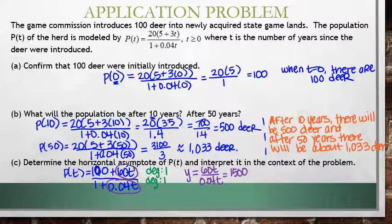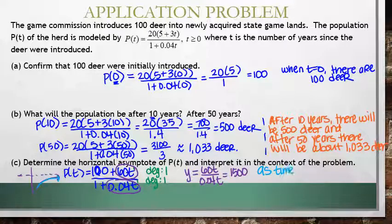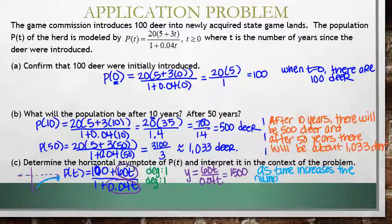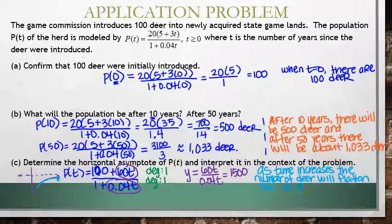What does this mean in the context of the problem? If you think about it, a horizontal asymptote is what your equation is going to get really close to as time is approaching infinity. So in the context of this problem, this means that as time goes on, your function is going to flatten out to 1500. So as time increases, the number of deer will flatten out to around 1500.